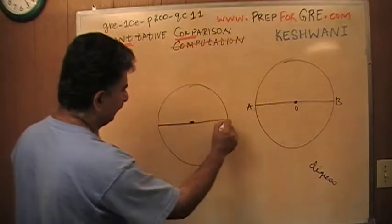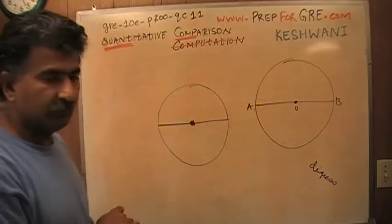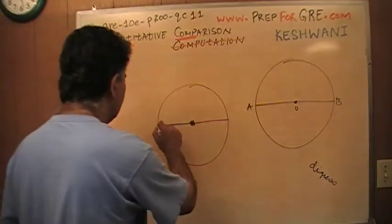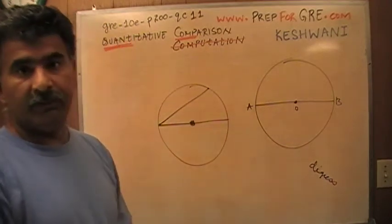If this is the center, that line that goes through the center of the circle, of course, is called the diameter.